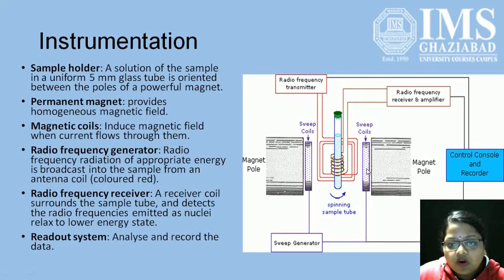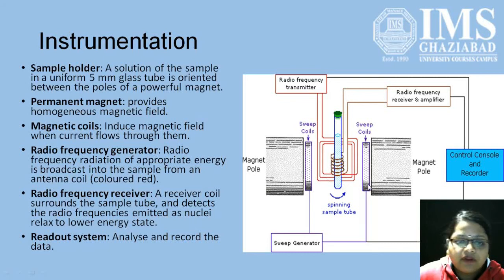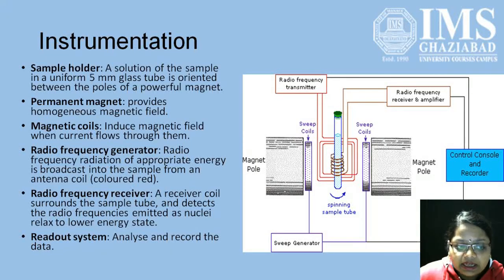This is the instrumentation of a simple NMR spectroscopy. First, we have the sample holder, a solution of sample in a uniform 5mm glass tube oriented between the poles of powerful magnets. We have permanent magnets to provide the homogeneous magnetic field and magnetic coils to induce magnetic field when current flows through them. We have the radio frequency generator. Radio frequency radiation of appropriate energy is broadcast into the sample with the help of antenna coils. We have the radio frequency receiver. The receiver coil surrounds the sample tube and detects the radio frequencies emitted as the nuclei relax to the lower energy state. When it flips from the higher energy state to the lower energy state, it releases a certain amount of radio frequency energy, which is detected by the detector systems. We have a proper readout system for analyzing and recording our data.